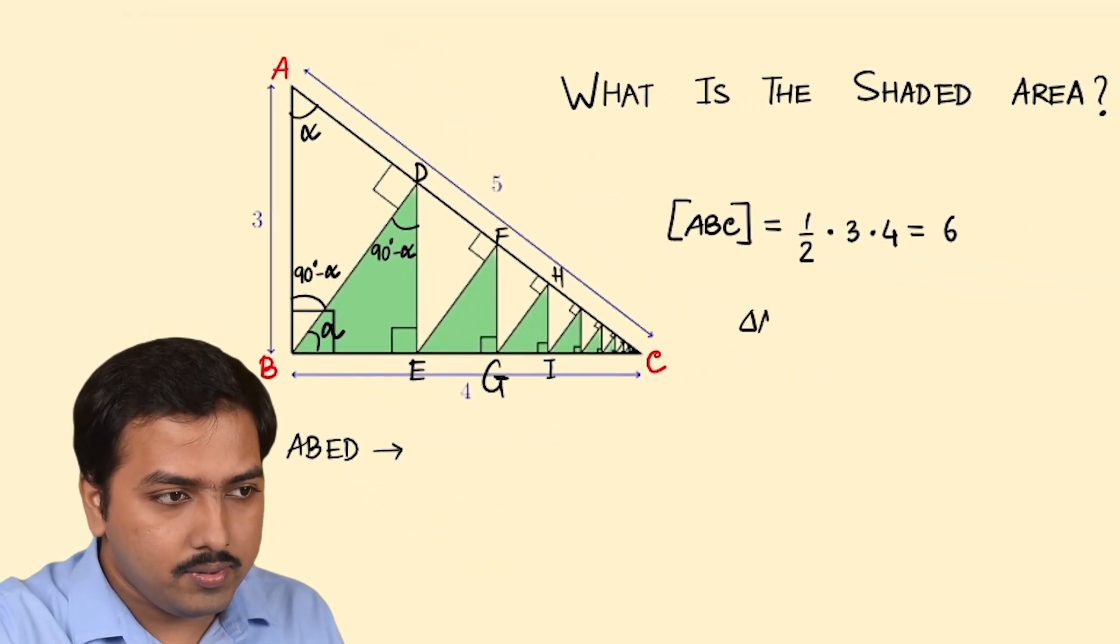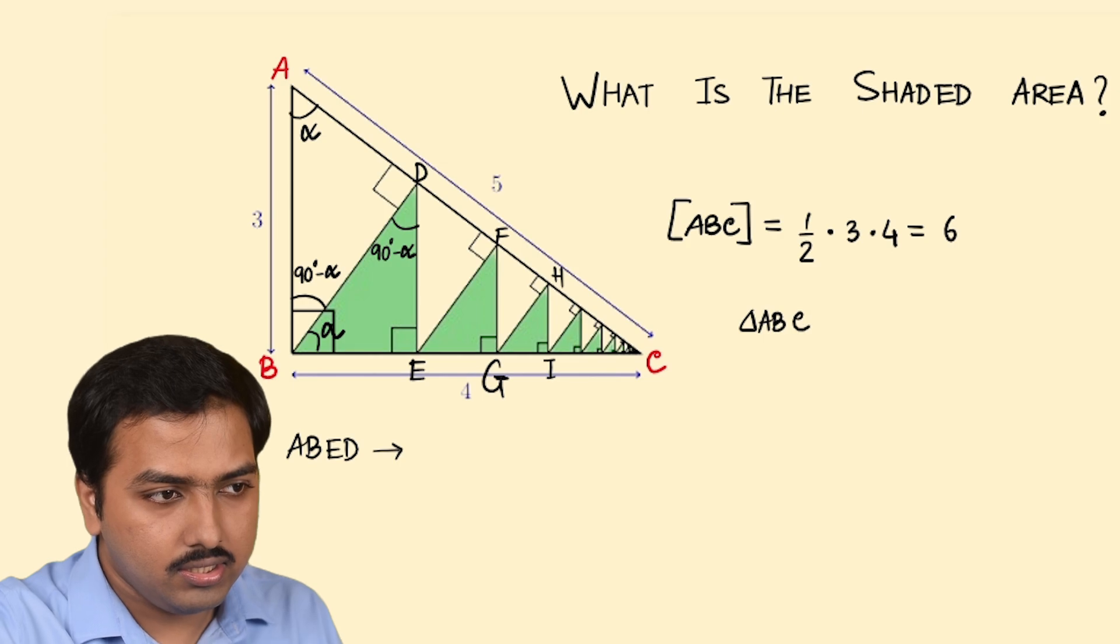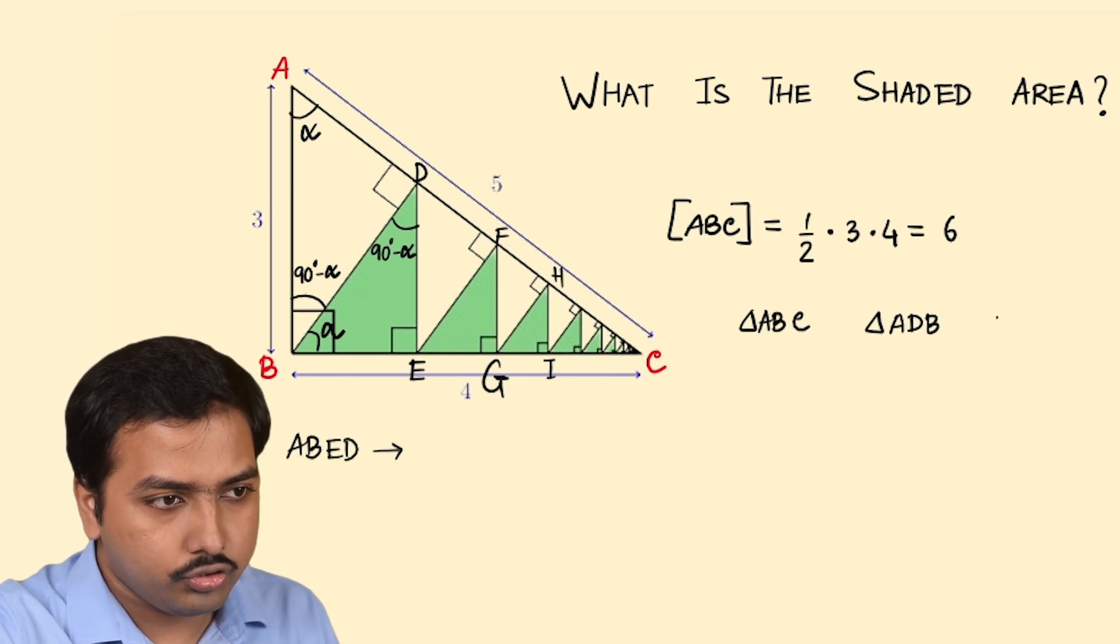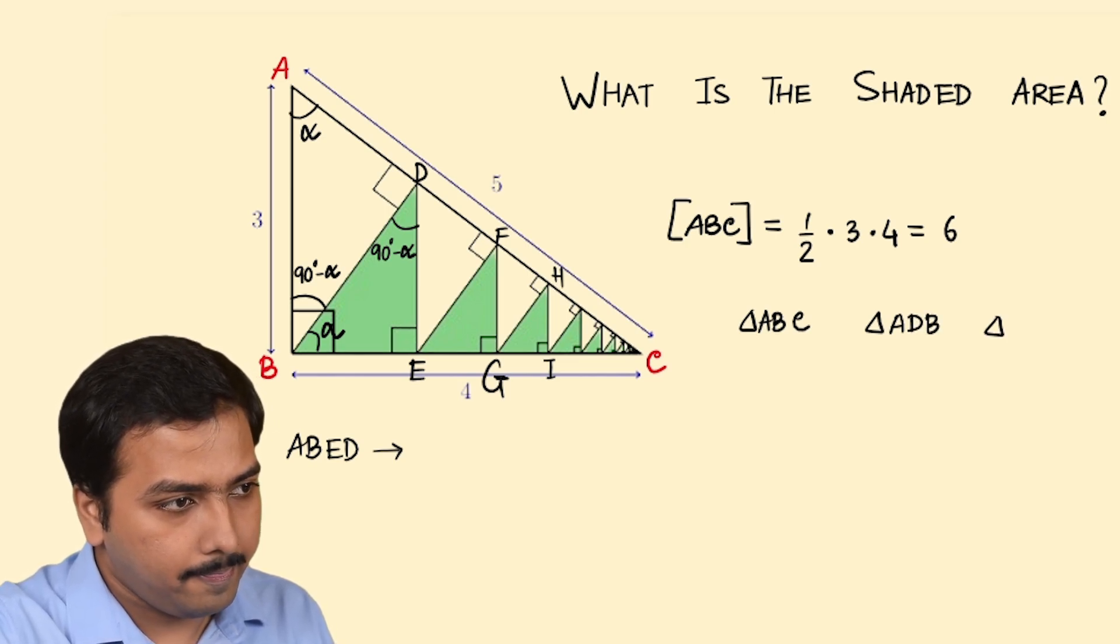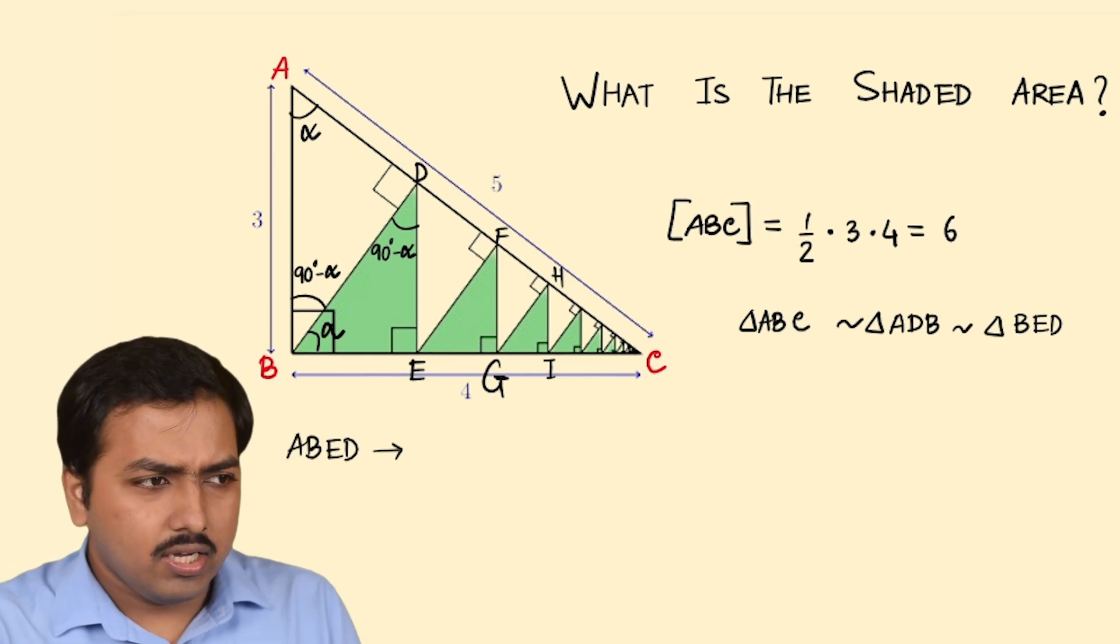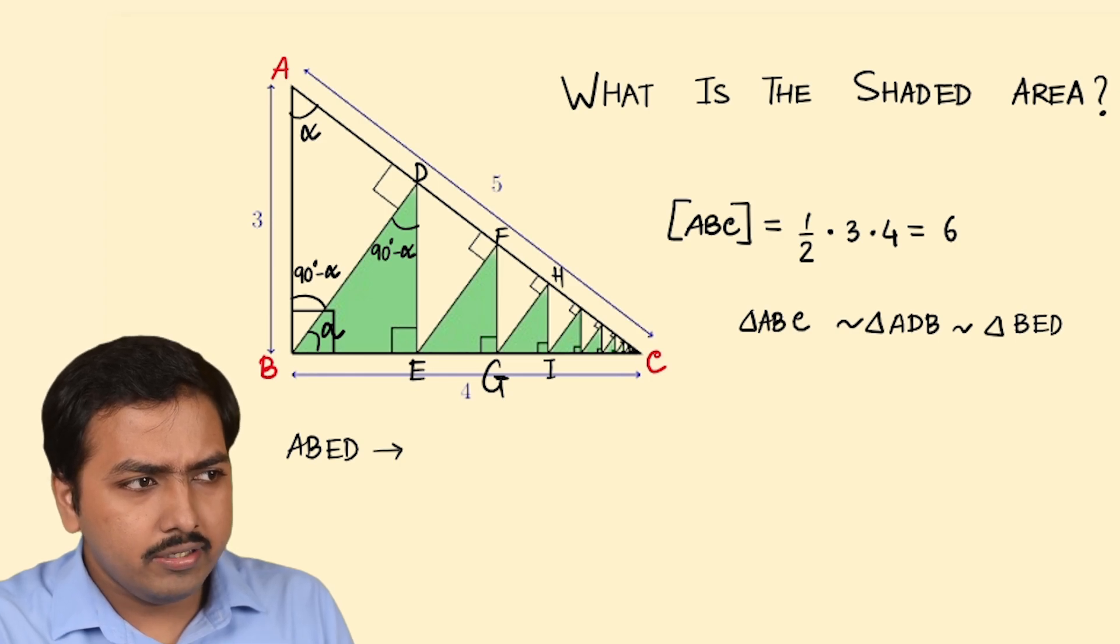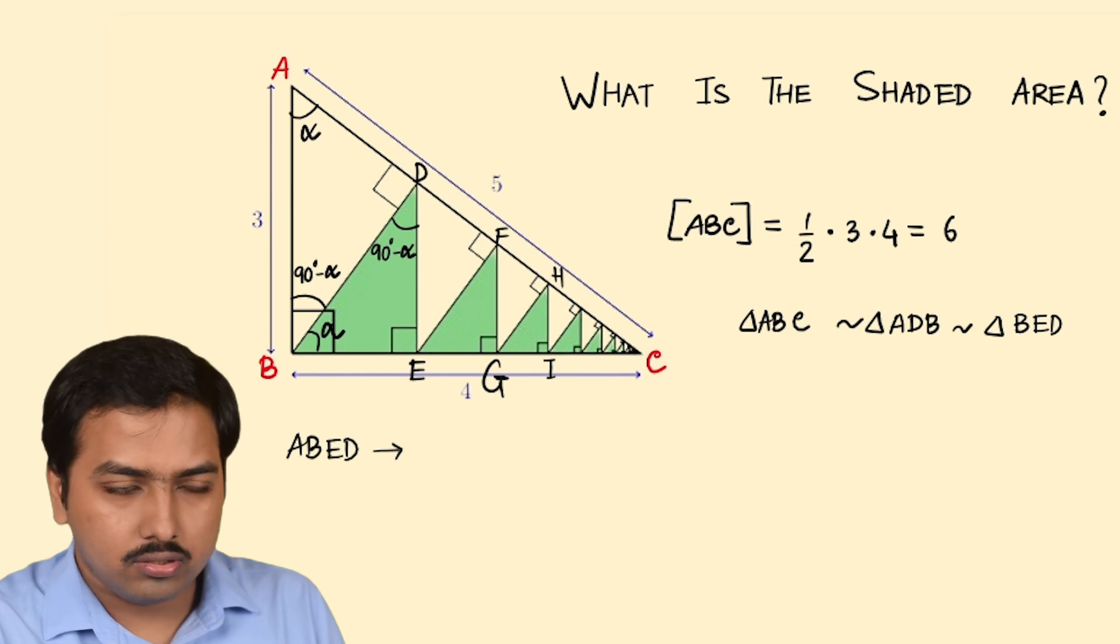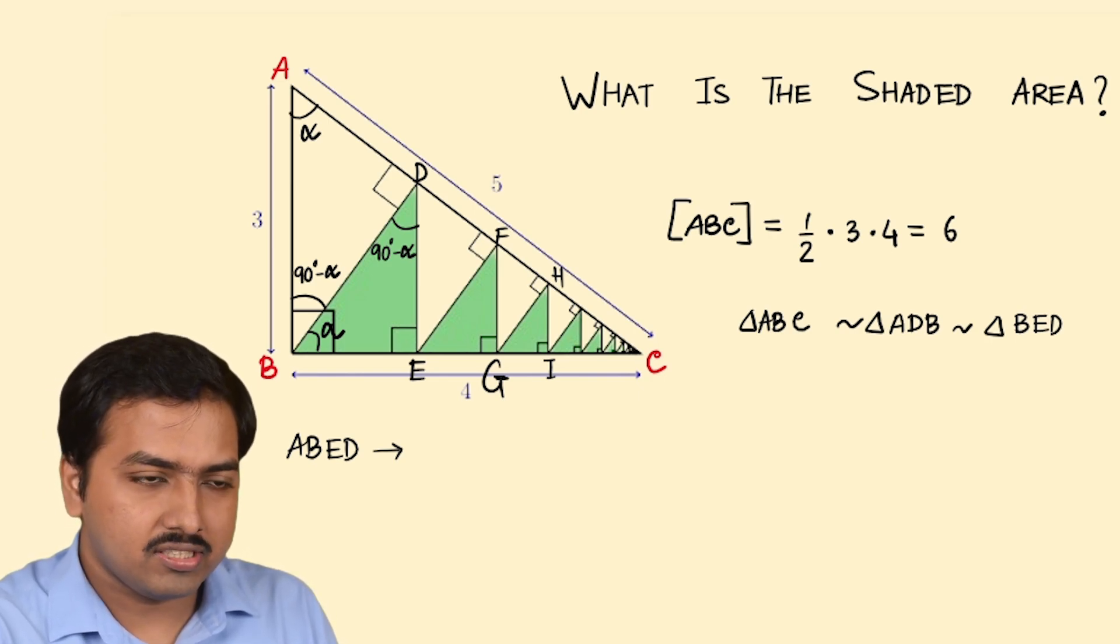That indicates a few things. Triangle ABC, triangle ABE, and triangle BAD, all of them are similar. You can prove it very easily by just looking into one of the angles is right angle and another angle is common or alpha so that's enough to call them similar.